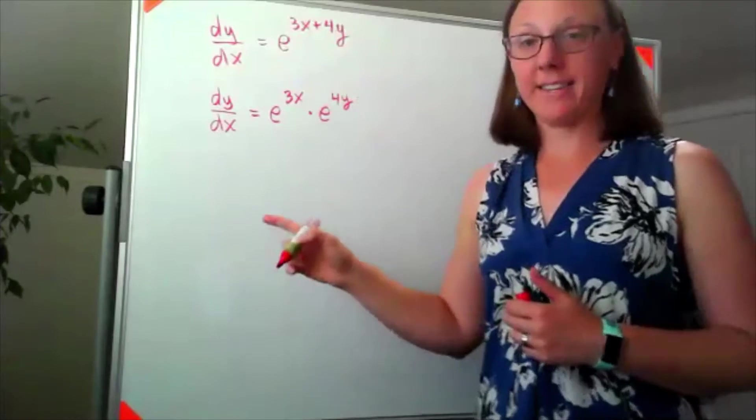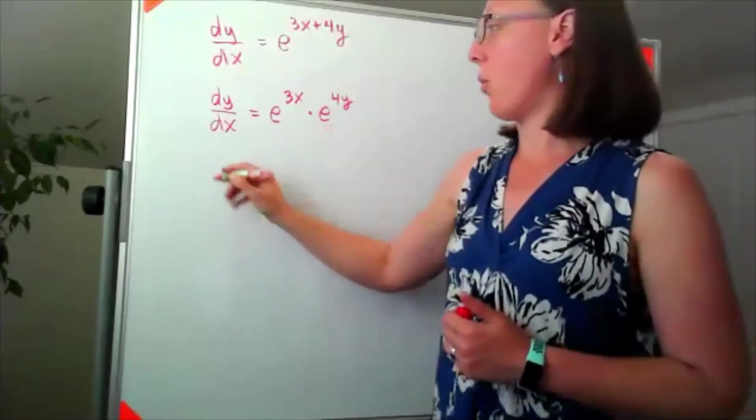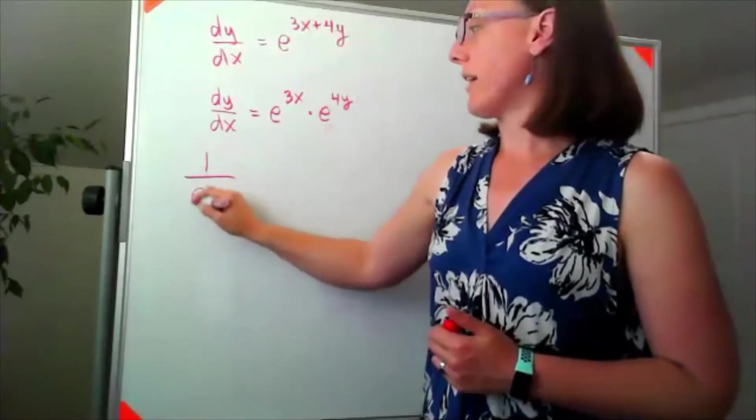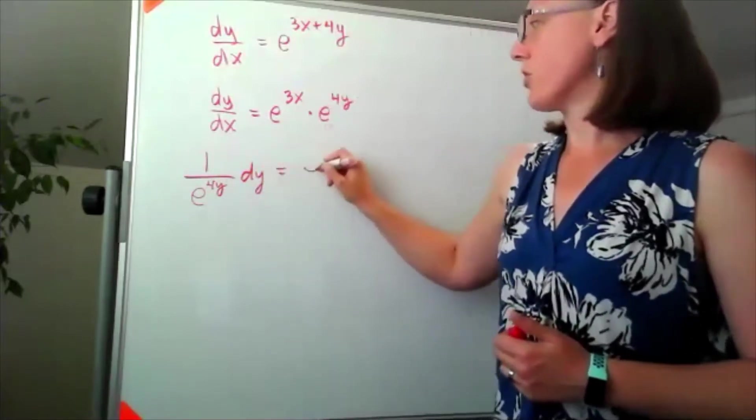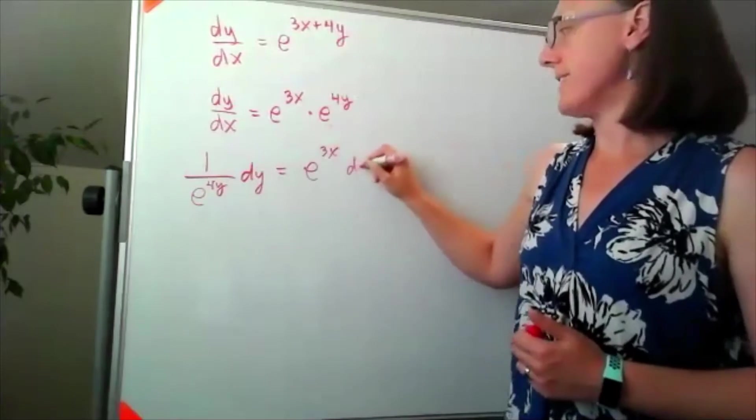Now I can separate by dividing my y term over. So I have 1 over e to the 4y dy is equal to e to the 3x dx.